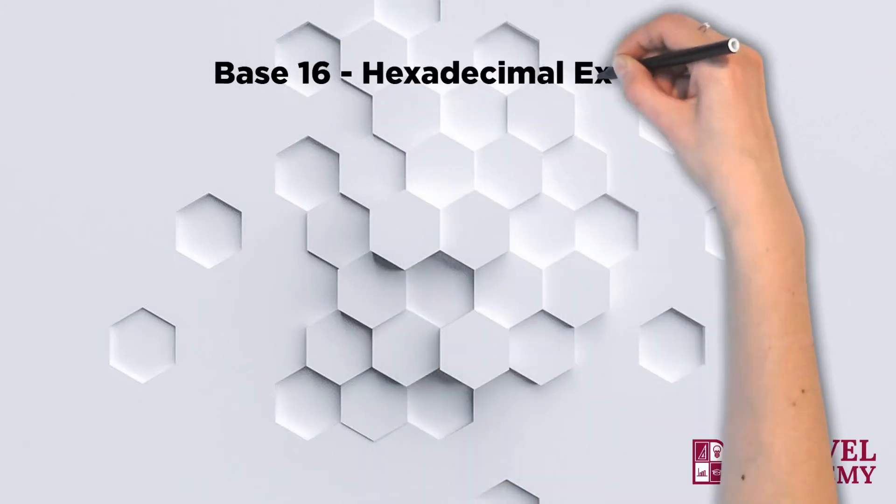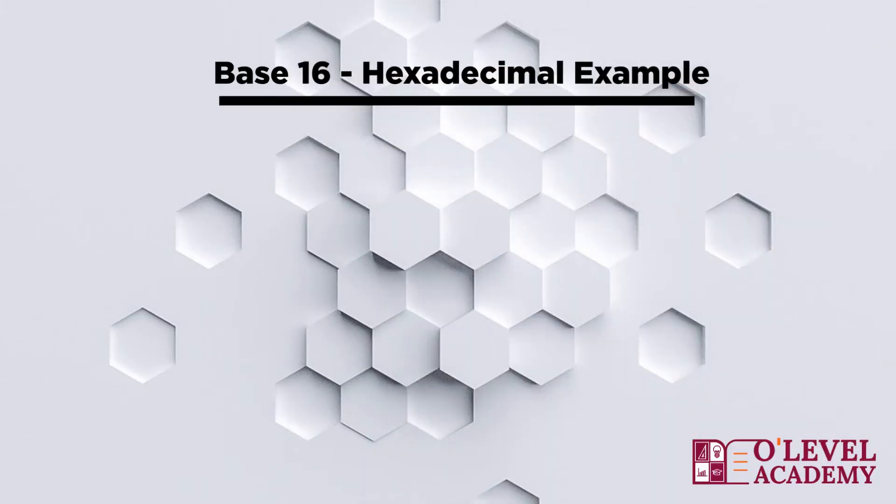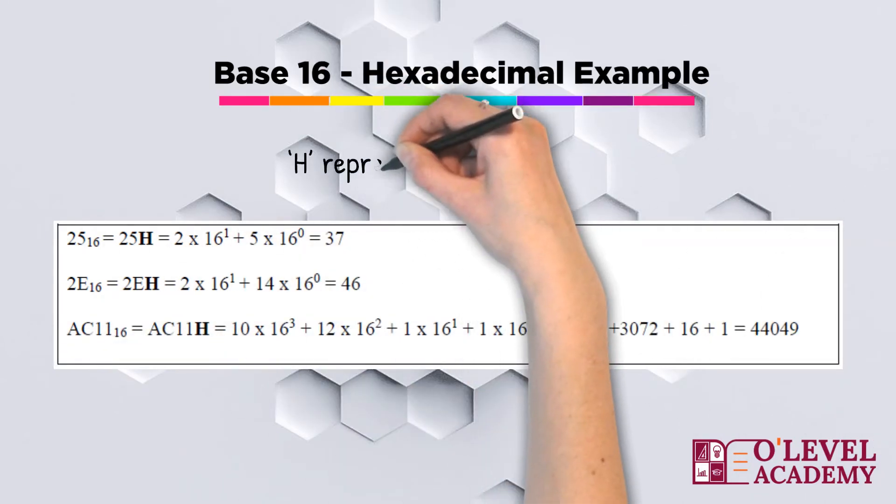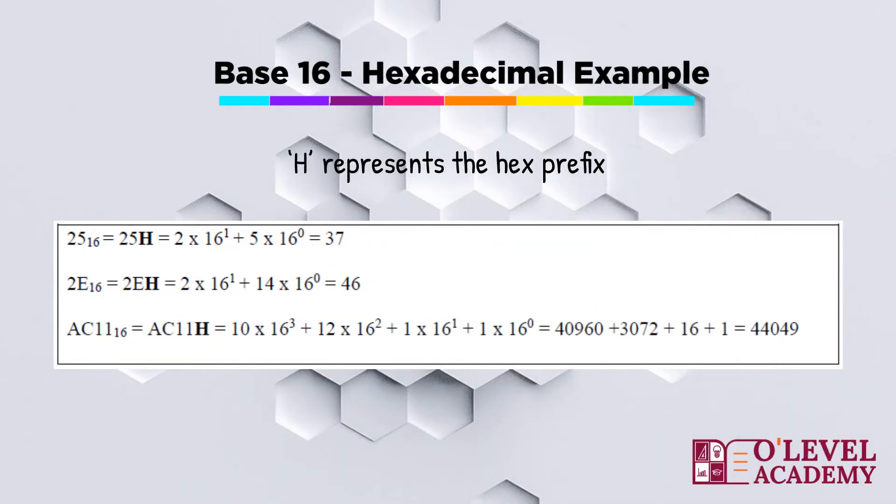On this screen, you can see an example of the hex number. 25 base 16 can also be written as 25h, where h represents the hex prefix. If we multiply each digit with its value, you will get the value in decimal numbers.